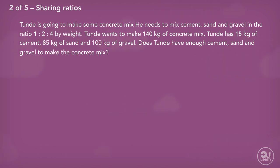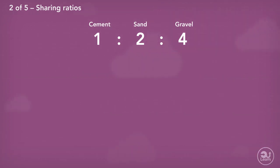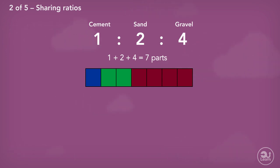Based on the order of the sentence and the ratio, cement represents one part, sand represents two parts, and gravel represents four parts. In order to answer this question, we will need to divide 140 by the ratio 1 to 2 to 4. We add all our parts together, which gives us seven parts in total.